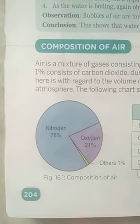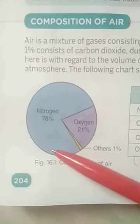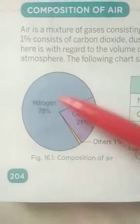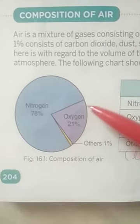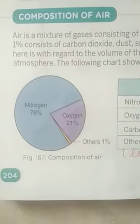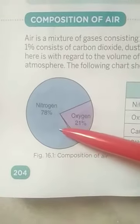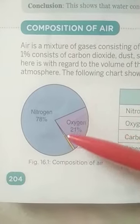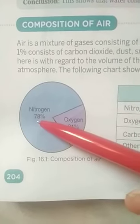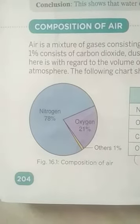Hello everyone. As we have discussed about the composition of air, air consists of a mixture of gases — nitrogen, oxygen, and other gases. We will discuss them one by one. Very first, we will discuss about nitrogen, which is present in the atmosphere at 78 percent.